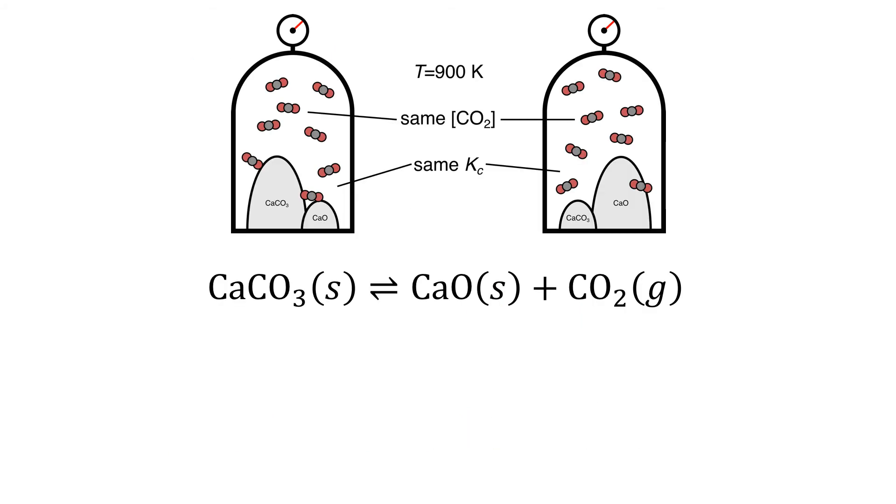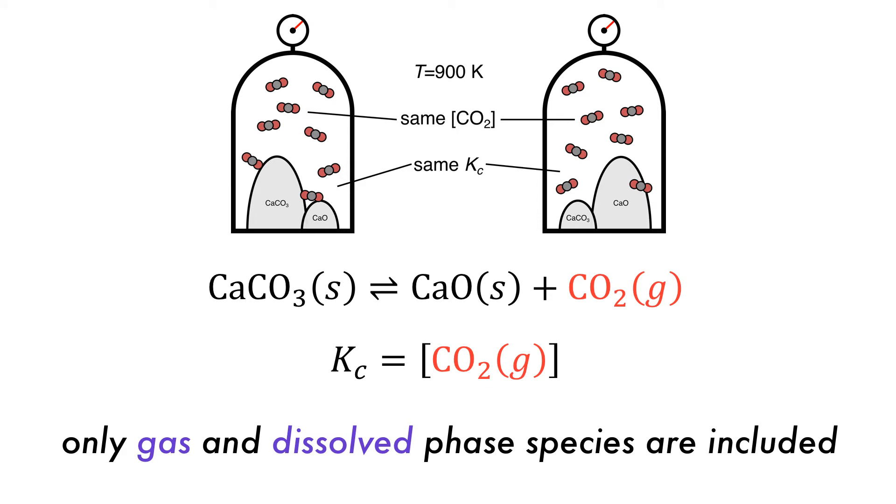Solid and pure liquid reactants are not included in the reaction equilibrium expression equation, and it is written only in the terms of gaseous or dissolved components. So in the reaction here, the value of K is only in terms of carbon dioxide, while calcium carbonate and calcium oxide are left out. This is because it doesn't make sense to discuss a pure solid or liquid in terms of concentration.